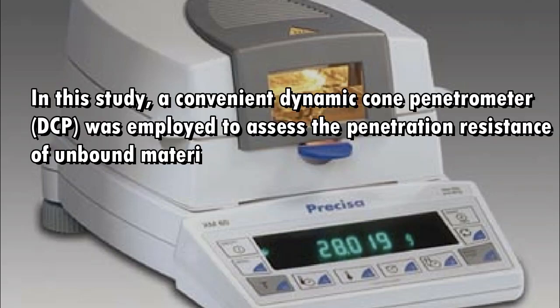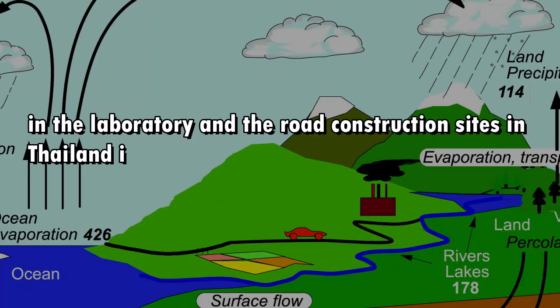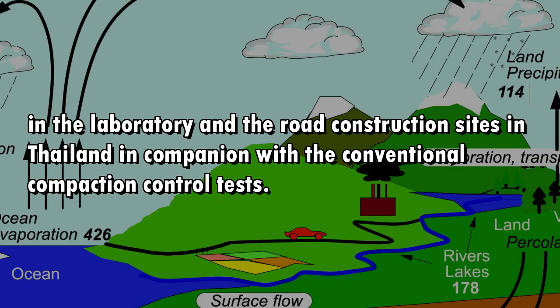In this study, a convenient dynamic cone penetrometer was employed to assess the penetration resistance of unbound materials, e.g. crushed rock base, soil aggregate subbase, sand embankment, natural subgrade, etc., in the laboratory and at road construction sites in Thailand, in companion with conventional compaction control tests.